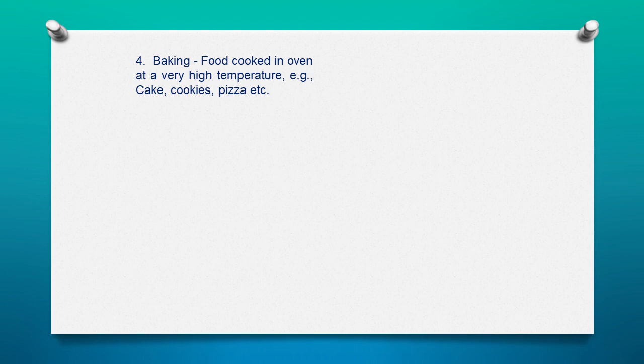The baking method: in this, food is cooked in the oven at a very high temperature. Examples include cakes, cookies, pizzas, etc., which are cooked by the baking method.